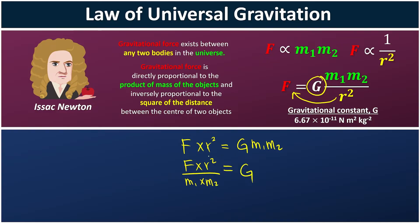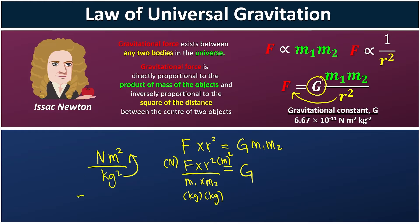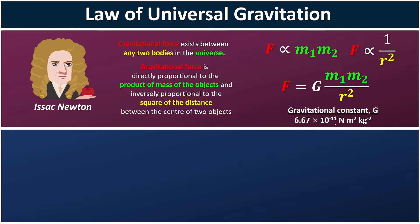We know force is calculated in Newtons, distance is in meters but we have it squared, and mass is in kg. So the gravitational constant will have units of Newton meter squared per kg squared. If we bring up the kg squared, we have Newton meter squared times kg to the power of negative 2. This explains how we get those units.